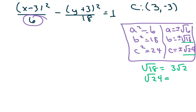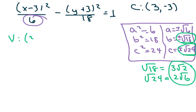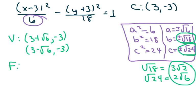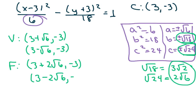I find it more helpful to look at the unsimplified forms when graphing. Since everything follows x, the vertices are (3 + √6, −3) and (3 − √6, −3). The foci are on the x-axis, so they are (3 + 2√6, −3) and (3 − 2√6, −3).